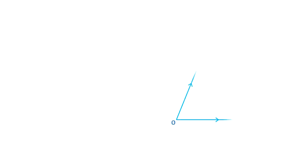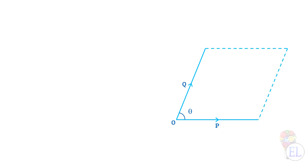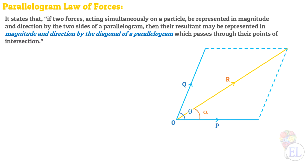Consider two forces P and Q acting simultaneously on a particle, with the angle between the two forces being theta. By extending imaginary lines, we can get a parallelogram as shown by the dotted lines. As per the Law of Parallelogram of Forces, the resultant of forces P and Q is given by the diagonal of this parallelogram, with its direction at alpha degrees from force P. The law states that if two forces acting simultaneously on a particle are represented in magnitude and direction by two sides of a parallelogram, then the resultant may be represented in magnitude and direction by the diagonal of the parallelogram which passes through their point of intersection.